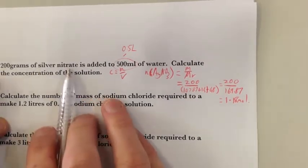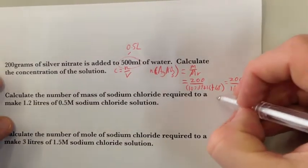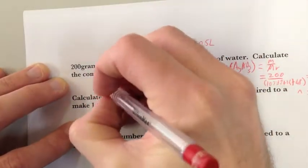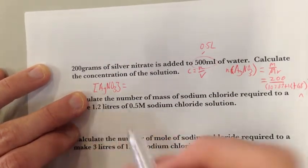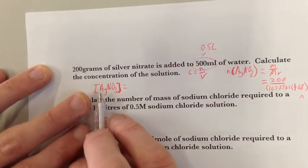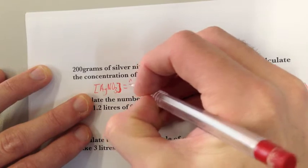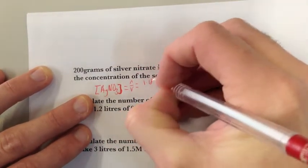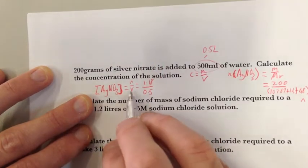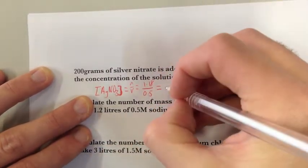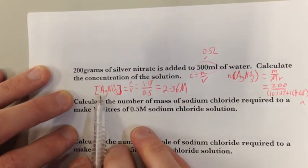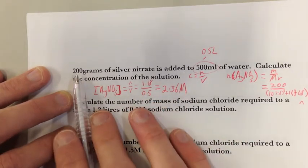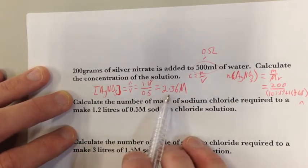So that's how many moles I have of silver nitrate. Now I've got my number of moles, I can work out my concentration. Concentration of AgNO₃ — I use square brackets to denote concentration, it's just a way of writing concentration; square brackets means concentration all the time. So concentration of silver nitrate equals number of moles over volume, equals 1.18 over 0.5, because my volume is 0.5 litres, equals 2.36 capital M for molar.